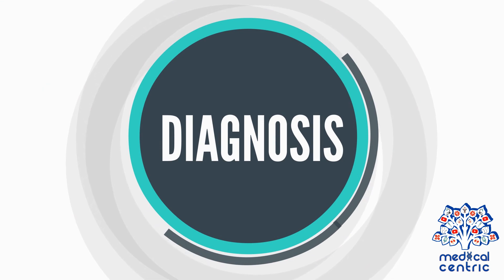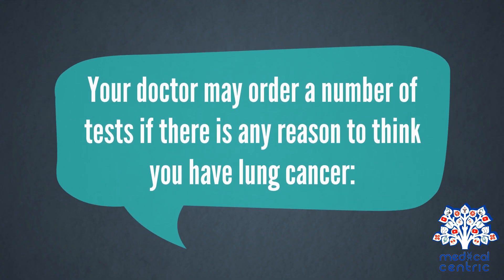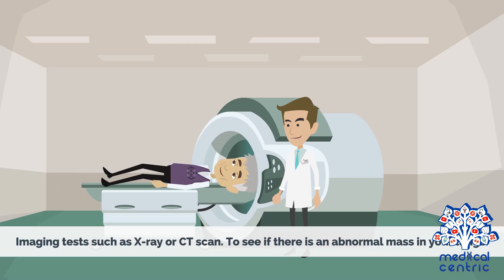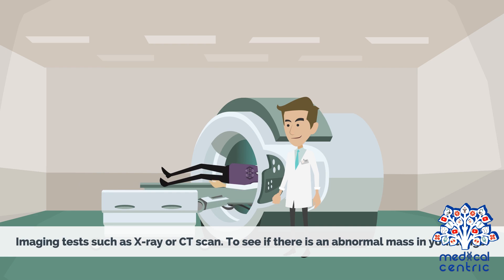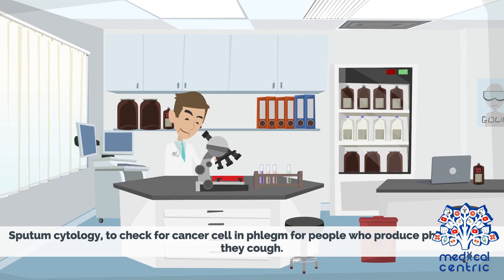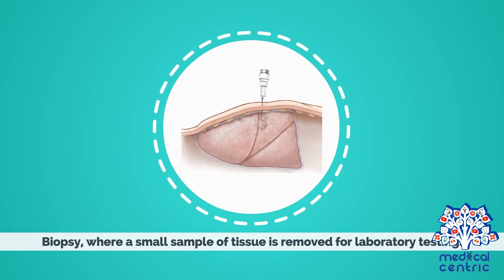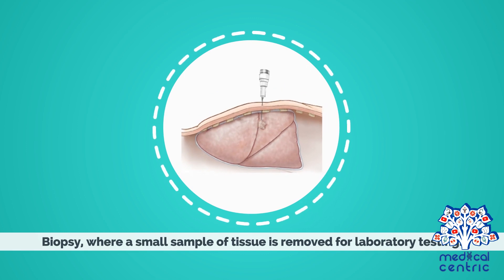Diagnosis and treatment. Your doctor may order a number of tests if there is any reason to think you have lung cancer. Imaging tests such as x-ray or CT scan can show if there is an abnormal mass in your lungs. Sputum cytology checks for cancer cells in phlegm for people who produce phlegm when they cough. A biopsy involves removing a small sample of tissue for laboratory testing.